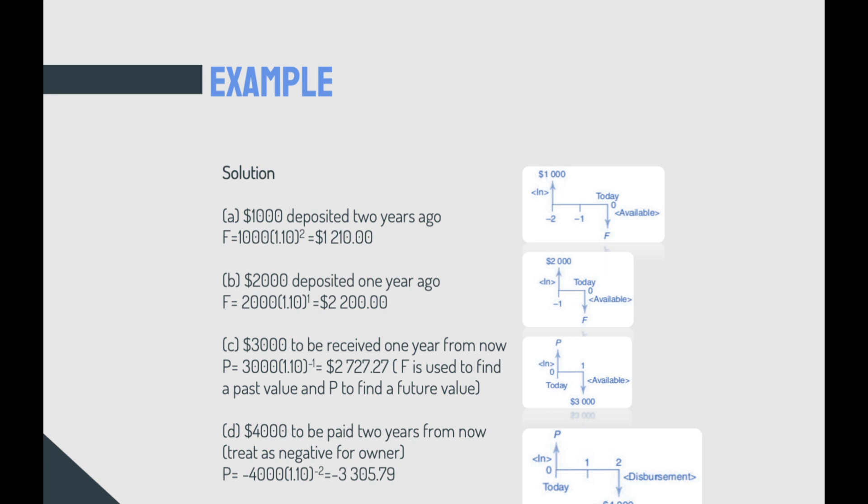Now, for B, we have $2,000 deposited one year ago. Same thing, but you will have instead of n equals 2 to be n equals 1. That would be $2,200.